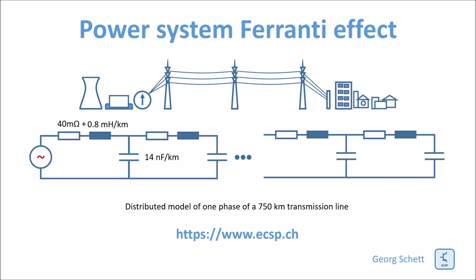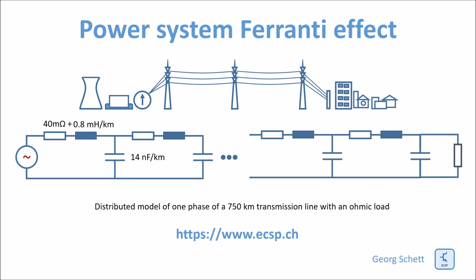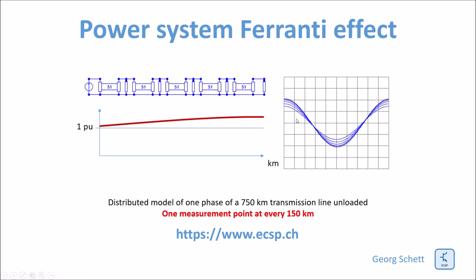Let's now come back to our distributed transmission line model and see what happens with an ohmic resistance at the end of the line. Here I have a 750 km line subdivided into five segments, measuring the voltage between each segment. You can see the traces of the individual voltages on the graph. The lowest voltage is the source voltage, and each segment shows increasing voltage until the highest voltage at the load end. In this case I have a very low load, meaning a high resistance, so the Ferranti effect is fully materialized.